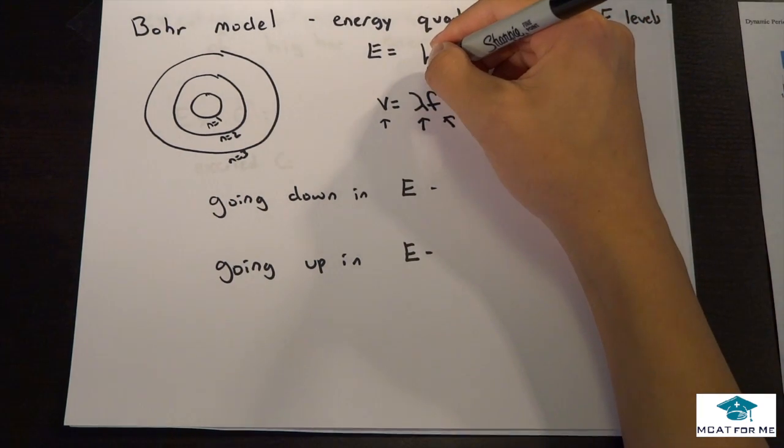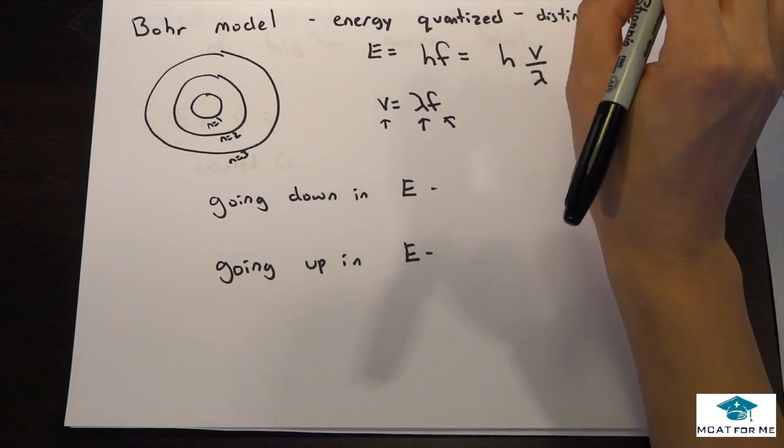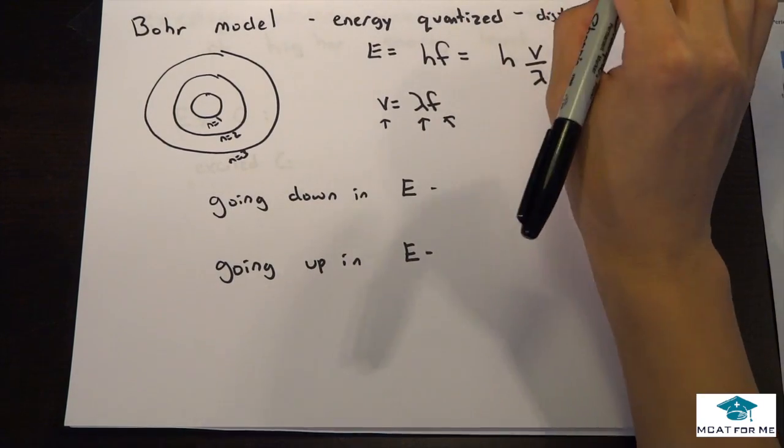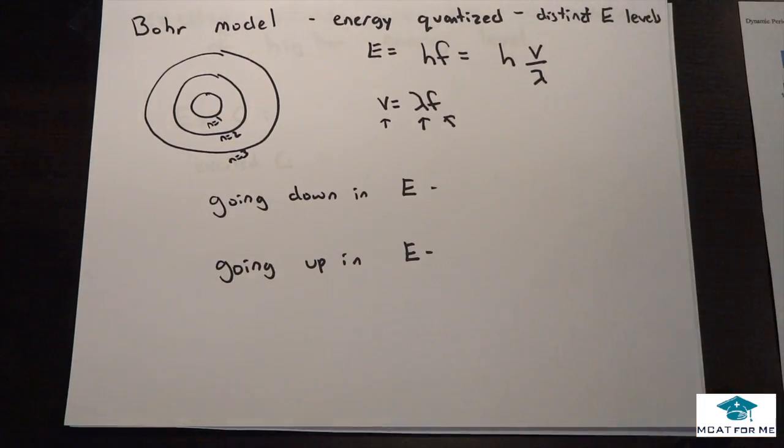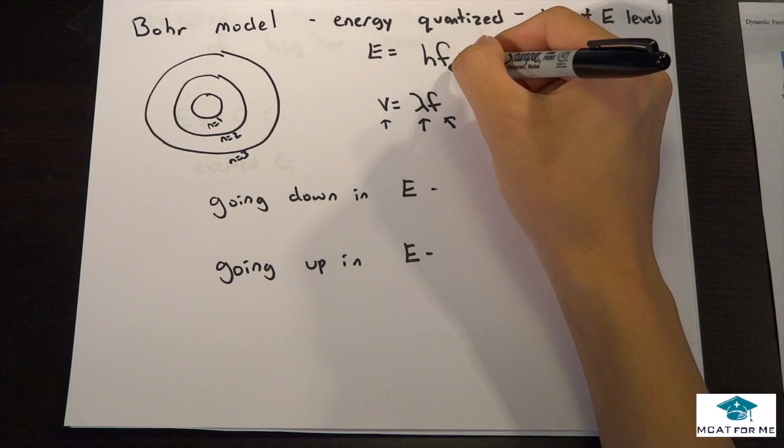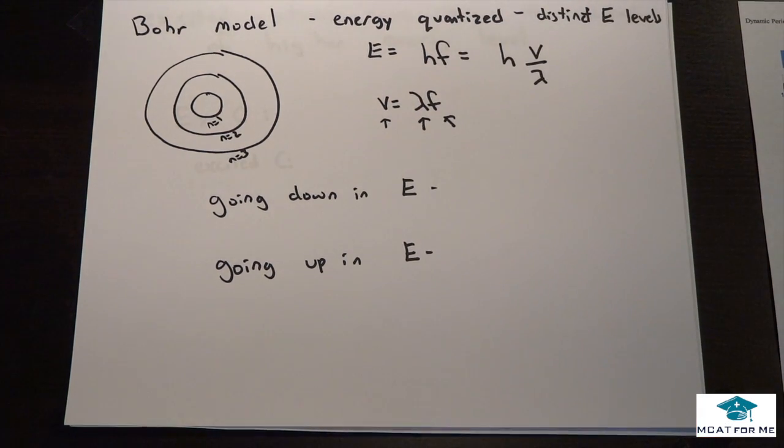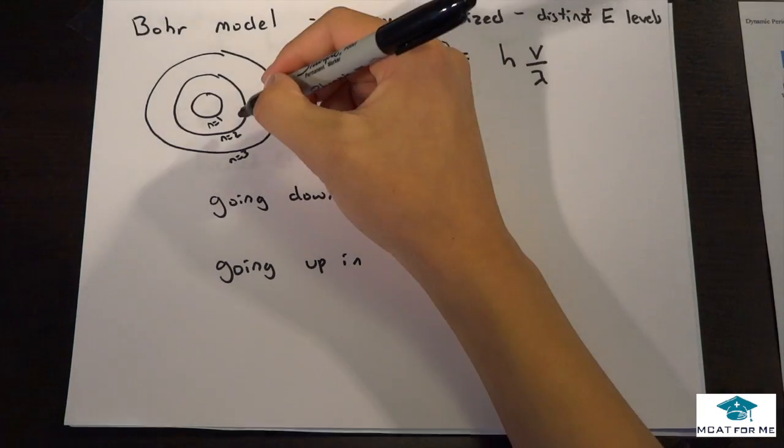If I didn't mention, h is Planck's constant. You don't need to know the number for it, you just know that it's a constant. If they give you proportions, you just know that energy is directly proportional to the frequency. When we go down in energy, say from n=2 to n=1, do we gain energy, absorb it, or release it?